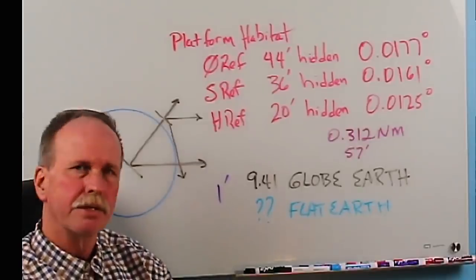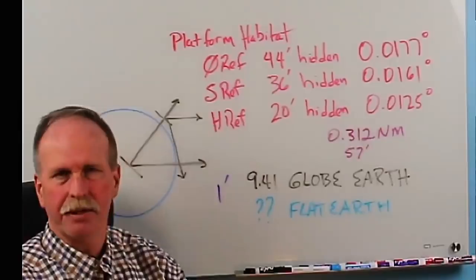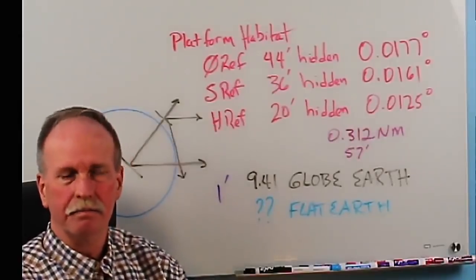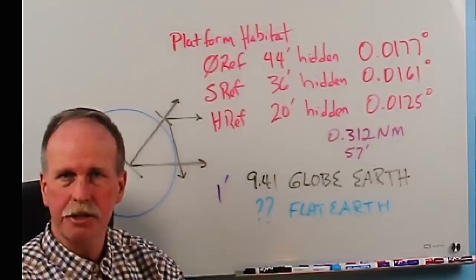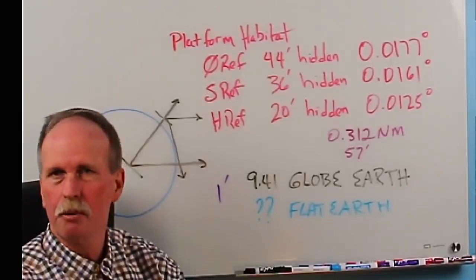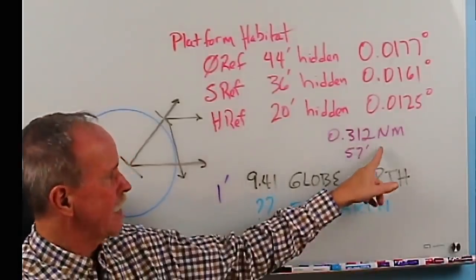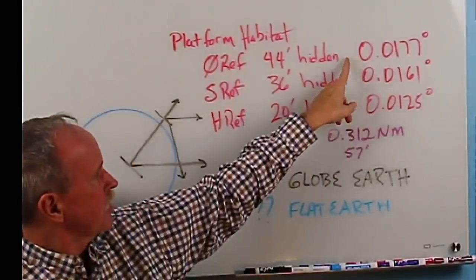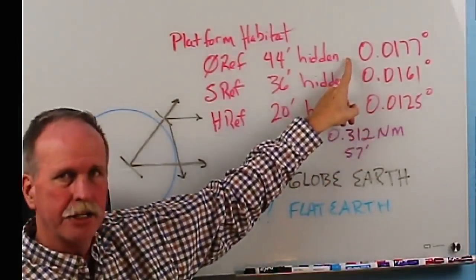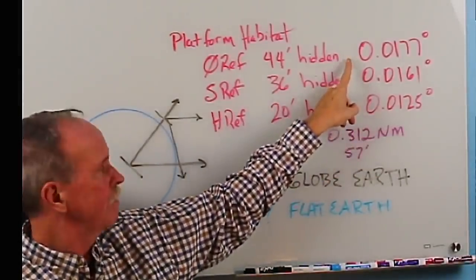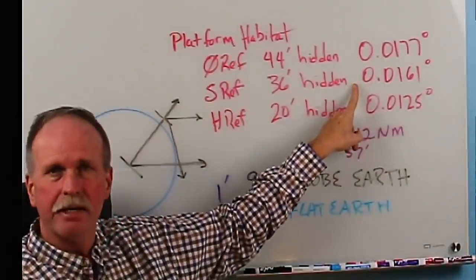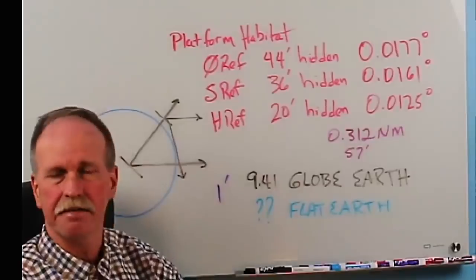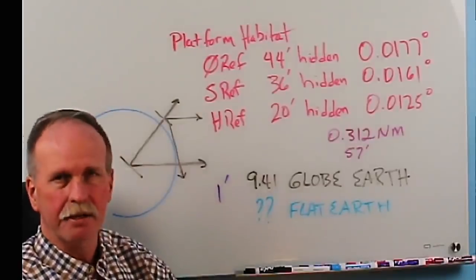Going from no refraction to severe refraction, how much will that change your position on earth? 0.312 nautical miles. About a third of a mile. What's the accuracy of a sextant? In the hands of an expert, you can get down to about a tenth of a nautical mile. In the hands of a talented amateur like me, two nautical miles is pretty good. That's well below it. How much does a zero refraction geometric horizon make compared to a normally refracted horizon? It changes your position on earth by 57 feet. I can live with that.